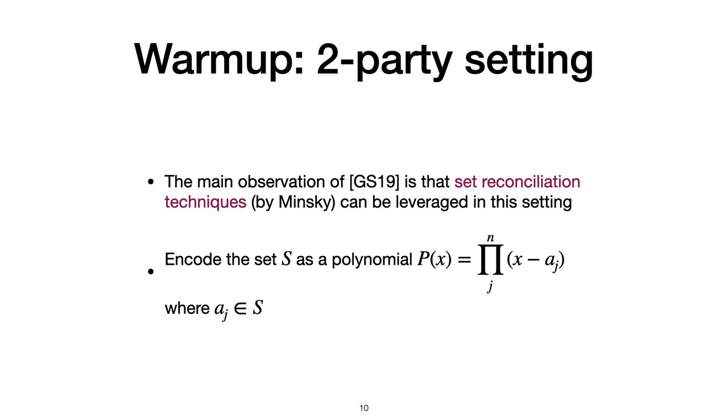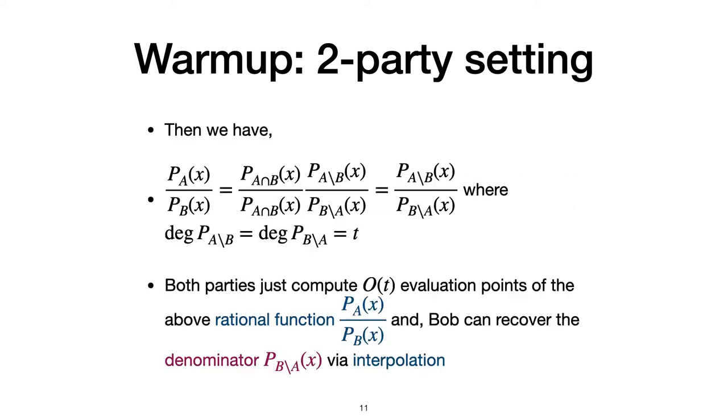The main observation is the set reconciliation techniques introduced by Minsky can be leveraged in this case. That is, each party encodes their own set as a polynomial. For each element aj from S, the polynomial is the product of all the terms of x minus aj. Now two parties have two polynomials, Pa and Pb, while encoding their sets. If we compute Pa over Pb, then the common factors of two polynomials, which are corresponding to the intersection, are cancelled out. Finally, it's only a rational function left with low degree.